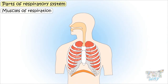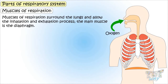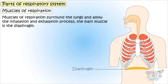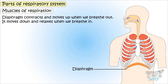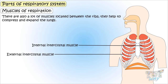Next are the muscles of respiration. The muscles of respiration allow inhalation and exhalation, and the main muscle in the system is the diaphragm — a thin sheet of muscle at the bottom of the thorax. The diaphragm contracts and moves up when we breathe out, and moves down and becomes almost straight when we breathe in. There are also muscles located between the ribs that help compress and expand the lungs while breathing in and out.